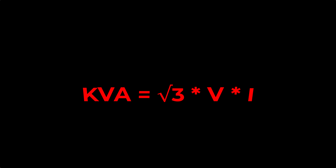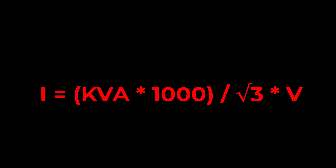First of all, you need to know the KVA formula. The KVA formula is: KVA = √3 × V × I. Rearranging to solve for current, the formula becomes: I = (KVA × 1000) / (√3 × V).